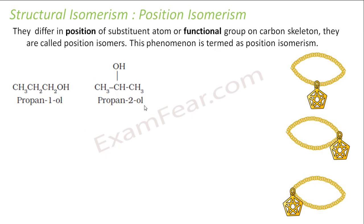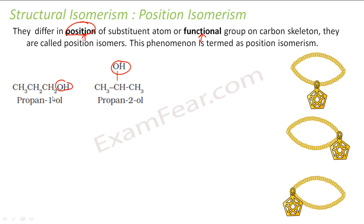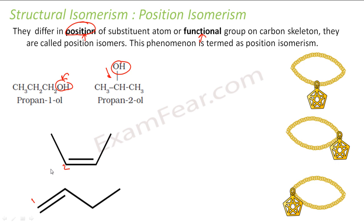The next is position isomerism. In this case, compounds differ in the position of a substituent atom or functional group on the carbon skeleton. For example, consider a necklace with a pendant: the pendant can be in the center, on the right side, or on the left side. The amount of gold and the pendant are the same, but the placement is different. Similarly in chemistry, we can have the OH group in the last position or the middle position, or a double bond in the first or second carbon. This is called position isomerism.